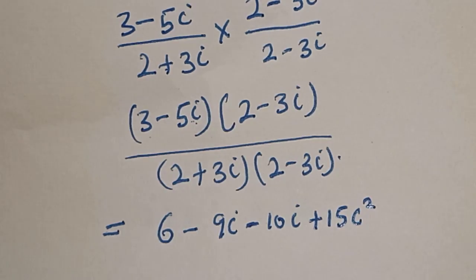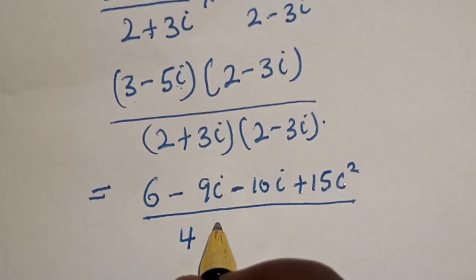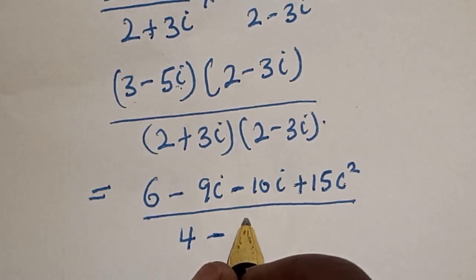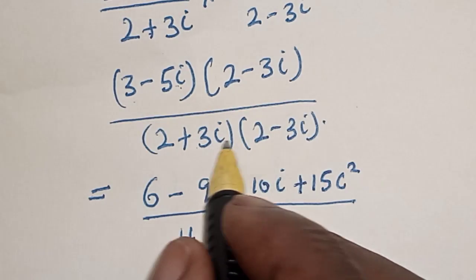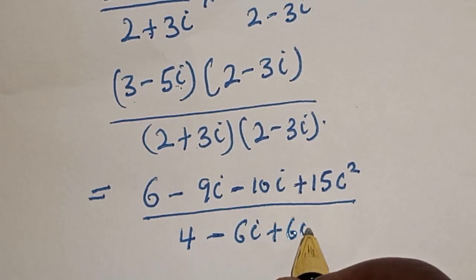This is plus 15i squared over 2 times 2. This is 4. Then, 2 times minus 3i. This is minus 6i plus 3i times 2. This is plus 6i.